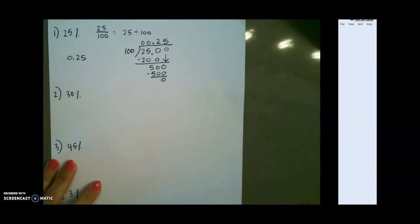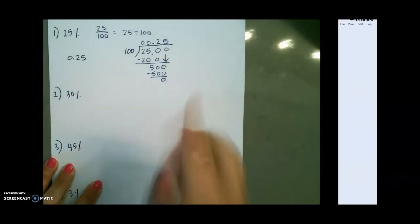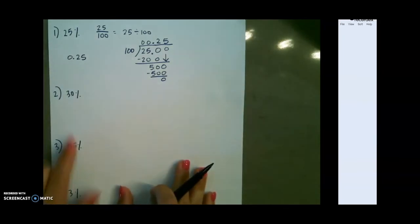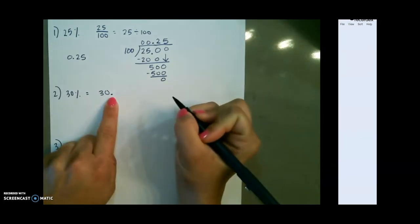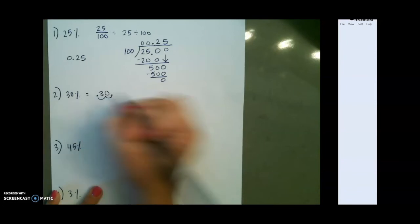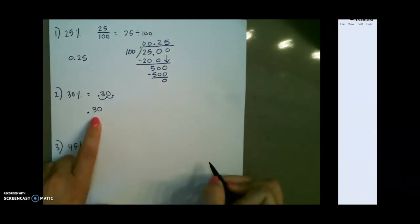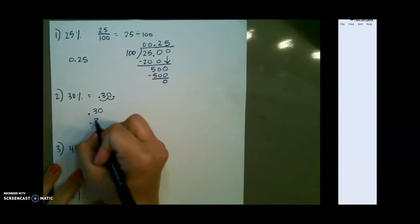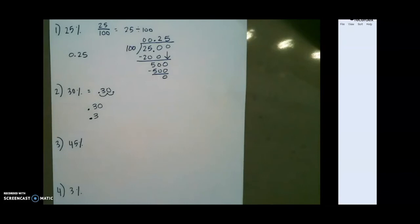Our shortcut here, so that we don't have to divide every time, is to move the decimal two places to the left. Since I don't have a decimal here, you have to remember that your decimal is always at the end of your number. And we're going to take that decimal, one, two to the left, and that would be your answer. For this one, you could leave the zero or just have it look without the zero as 3 tenths.